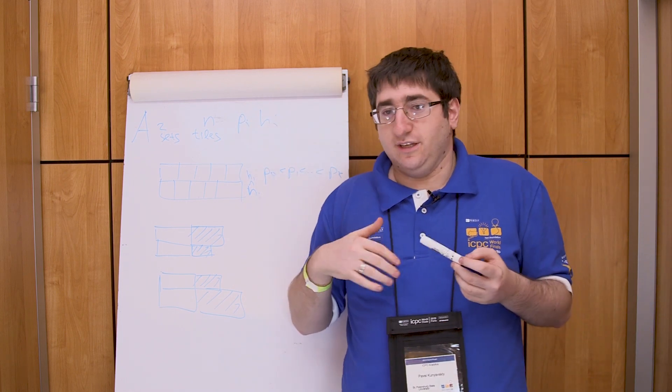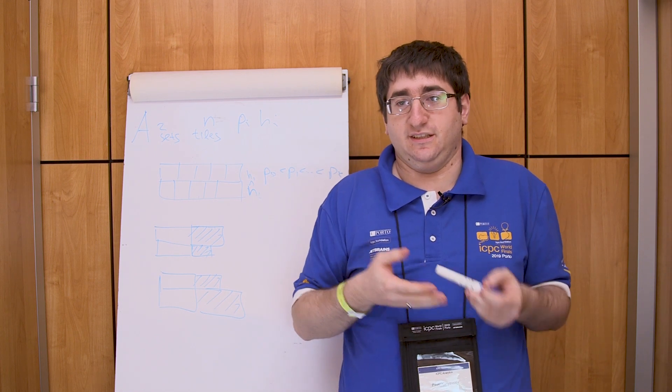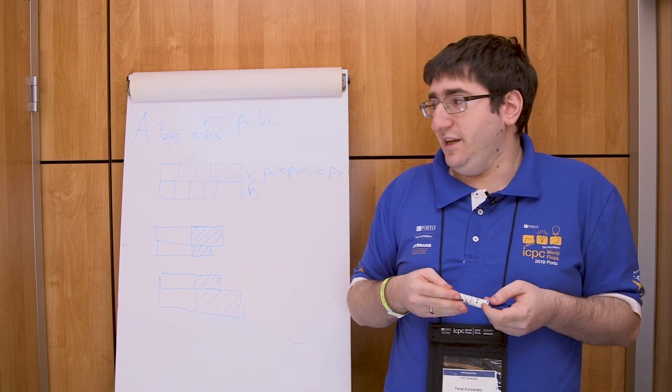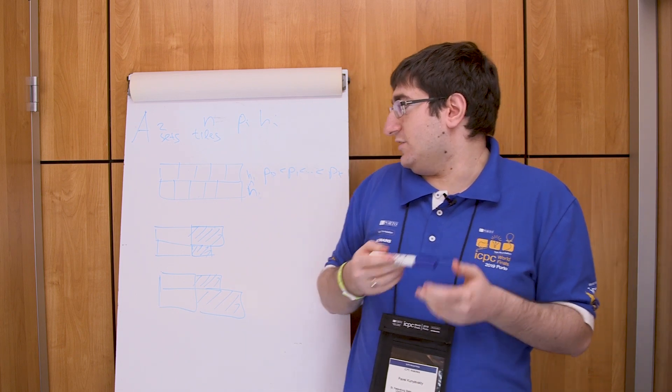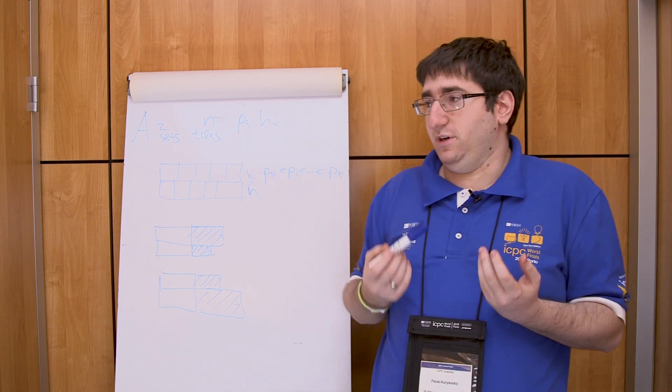So we need to arrange them in two rows. First set in a first row and second set in a second row. We have two restrictions. First of all, prices should not decrease in each line, both in first line and second line.